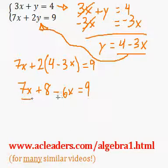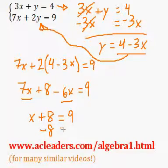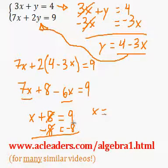Now I can combine like terms. 7x minus 6x is just x, then we have plus 8 is equal to 9, and I can subtract 8 from both sides of the equation. 8s cancel out and x is going to be equal to 9 minus 8, 1.